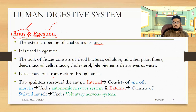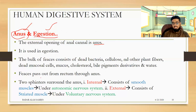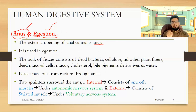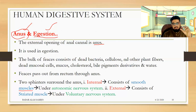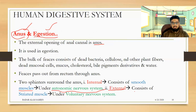Feces pass out from the rectum through the anus. To regulate and control the anus, there are two sphincters: internal and external. The internal sphincter consists of smooth muscles and works under the autonomic nervous system.